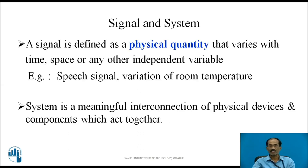A signal is defined as a physical quantity that varies with time, space, or any other independent variable. For example, what I am speaking now is a speech signal or voice signal, which is a continuous time signal. Variation of room temperature is also an example — temperature continuously varies irrespective of time. A system is a meaningful interconnection of physical devices and components which act together, arranged in such a way as to perform a particular task.